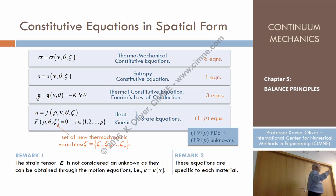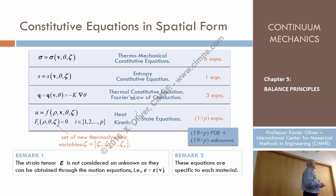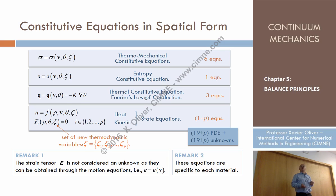The heat flux vector is an unknown, and we are going to produce a law that provides it. This is called the thermal constitutive equation — it provides the value of the conductive heat flux tensor in terms of the temperature. This is the famous Fourier's law, which says that the conductive flux equals minus one property — the conductivity of the material — times the gradient of the temperature field. So we postulate that equation through Fourier's law.